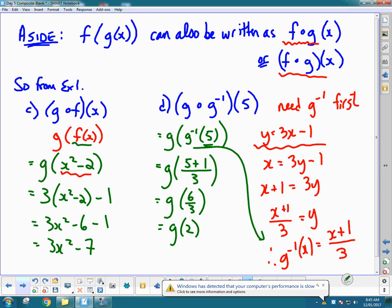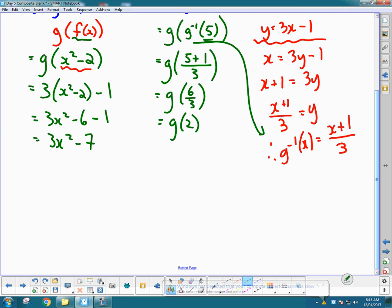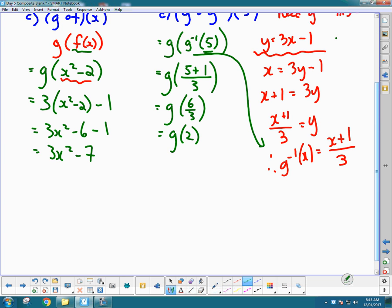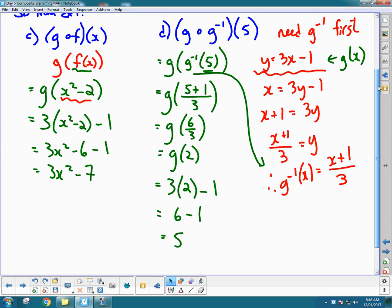And now we take that two and it gets plugged into the g function. So remember this is the g(x) function, so we'll take this answer of two and plug it right into the g(x) function. So 3 × 2 - 1. Three times two is six minus one, and the answer is five. So then g∘g⁻¹(5) ends up being five.